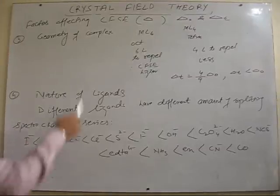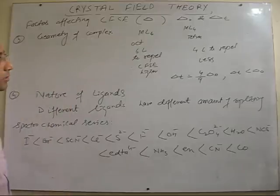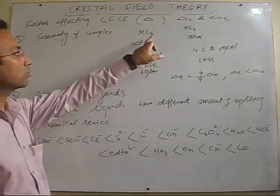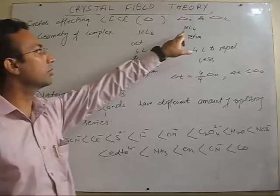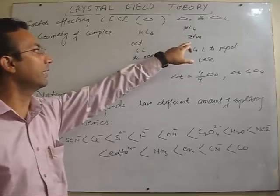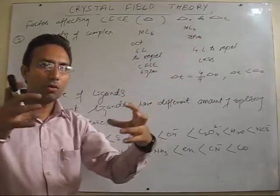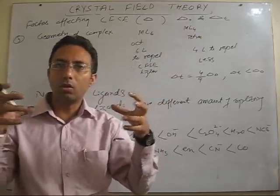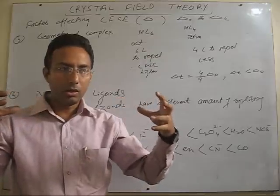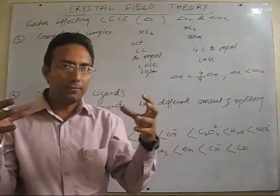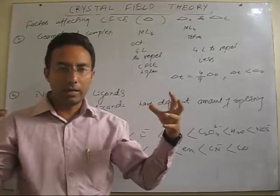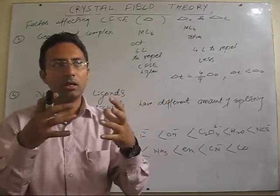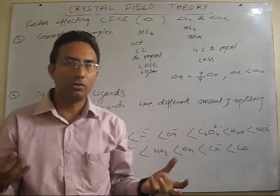So, we were discussing the effect of geometry on the value of crystal field splitting. We have seen in case of coordination number 6, coordination number 4, that is octahedral and tetrahedral. In case of octahedral, the ligands are approaching along the axis and along the axis, the orbitals feel more repulsion. There is almost a head-on collision between them, you can say, and there is more degree of repulsion.